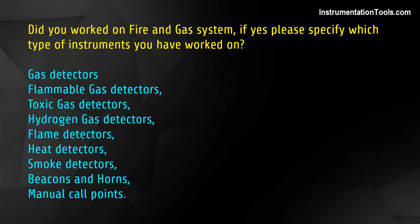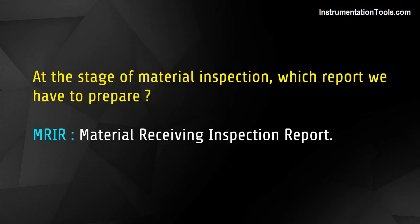Did you work on fire and gas systems? If yes, please specify which types of instruments. Gas detectors, flammable gas detectors, toxic gas detectors, hydrogen gas detectors, flame detectors, heat detectors, smoke detectors, beacons and horns, and manual call points. At the stage of material inspection, the report we have to prepare is the MRIR – Material Receiving Inspection Report.